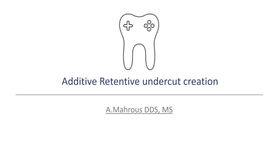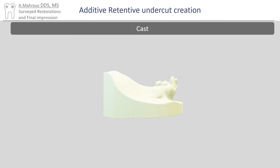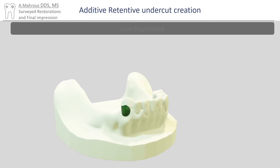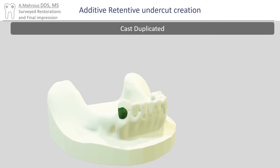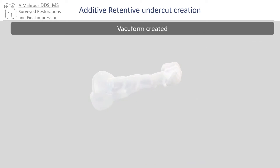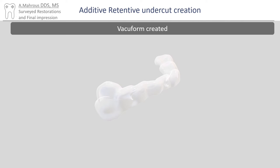Let's start with the additive method. Traditionally, a cast is made of the arch. Next, wax is added to the cast to create the desired undercut. The cast is then duplicated into stone. A vacuform matrix is then made over the tooth that was waxed up. The clear matrix is then removed and made ready for use in the patient's mouth. Most of those steps are done in the lab or before the patient arrives.